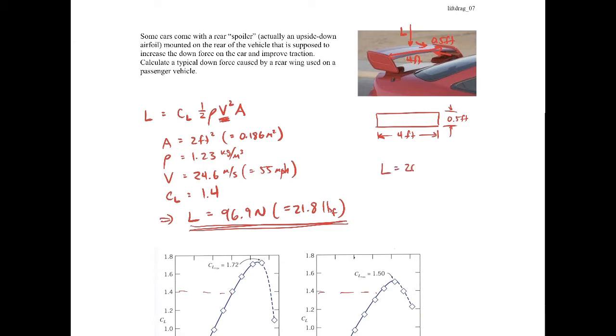To get a downforce of 200 pounds force, which is about 890 newtons, then you'd find that the speed you'd have to travel is 70.7 meters per second or 158 miles per hour.